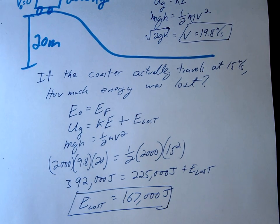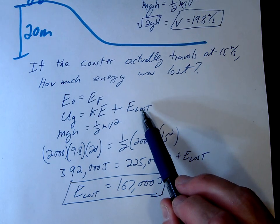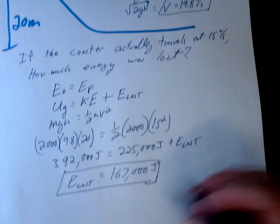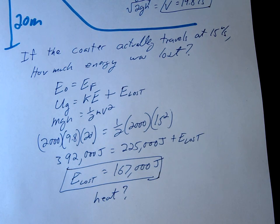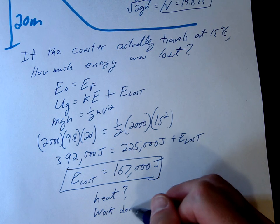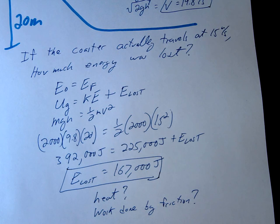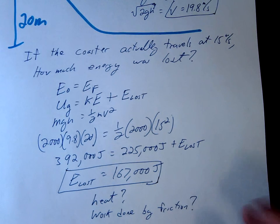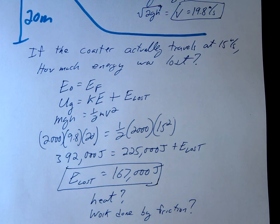Just another quick word. Sometimes they don't ask for energy loss specifically. They might say something like, how much heat was generated. You're just going to solve it the same way. Or they might ask, how much work was done by friction. And again, you're just going to solve it the same way. So work done by friction would be the same amount of energy that gets lost.